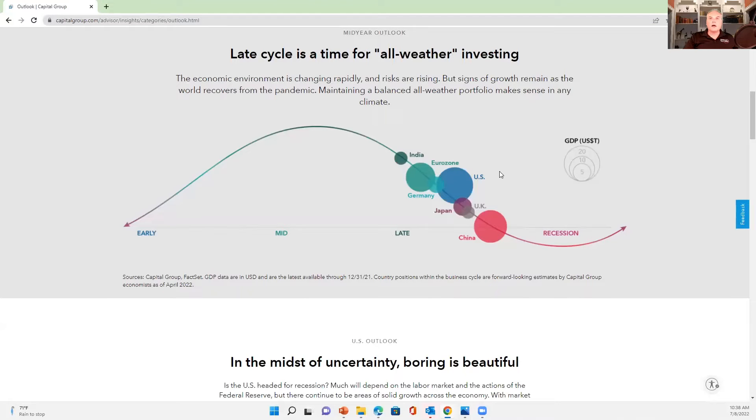And so there's investment firms that periodically will publish data based on their own research that shows where different countries are in this cycle. This is from a recent one, which shows that most countries are kind of headed towards recession,